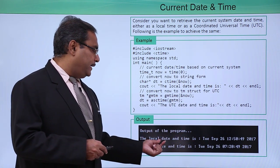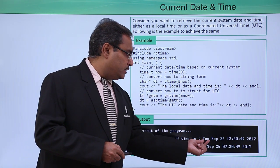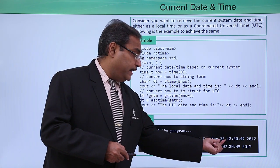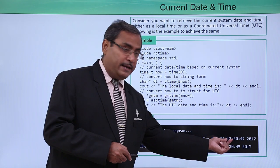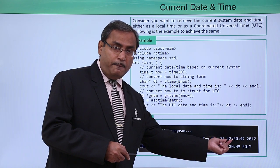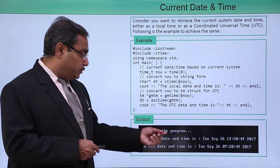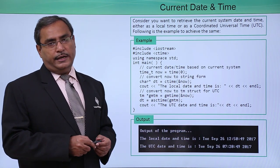We have the local date and time is that respective day, that is a month, that is the respective date we are having, this respective time we are having, this hour minute and second accordingly and also the respective year. This is a format in which it is getting printed.